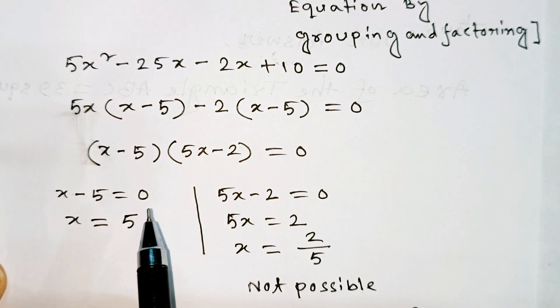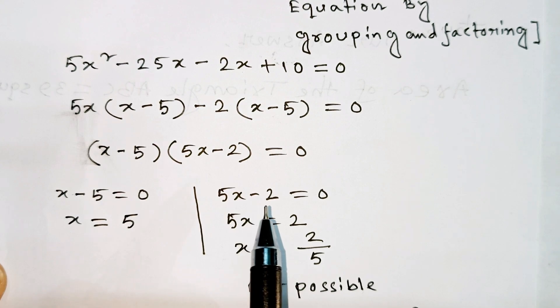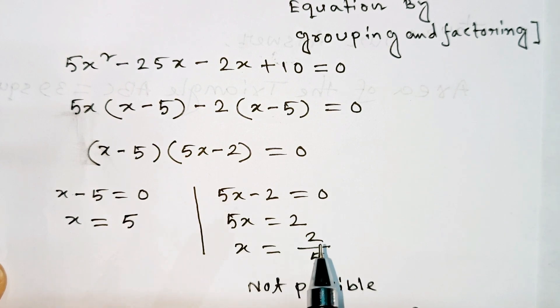From x minus 5 equals 0, we get x equals 5. From 5x minus 2 equals 0, we get 5x equals 2, so x equals 2 divided by 5.